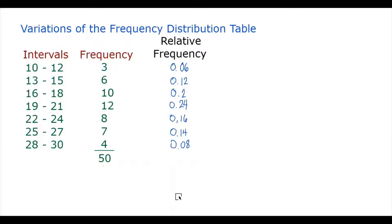The total of the relative frequencies, if you add them all, should be equal to 1. The total is 1, but sometimes it may not equal exactly 1 because we tend to round to the nearest hundredth. So don't worry if it's not exactly equal to 1.